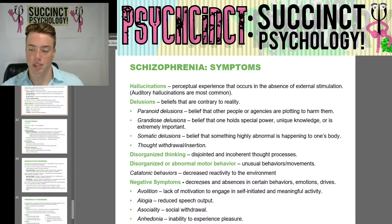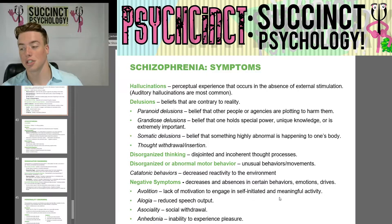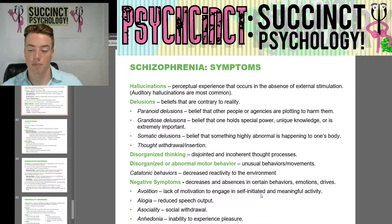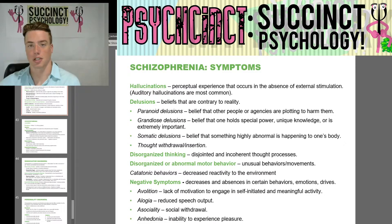Then there are negative symptoms: decreases or absences in certain behaviors, emotions, and drives. These include avolition, which is the lack of motivation to engage in self-initiated and meaningful activity; alogia, which is reduced speech output; asociality, which is social withdrawal; and anhedonia, or the inability to experience pleasure.